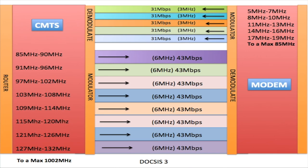Cable internet service rides on what was traditionally the cable TV service, using one cable for all customers in the local area. The cables were already set up that way, so internet providers had to make internet work on the same infrastructure — that's why all customers share the same cable. By contrast, telephone DSL gives each customer their own individual line, so DSL users don't share bandwidth. However, cable has much more total bandwidth to share than a DSL line would.